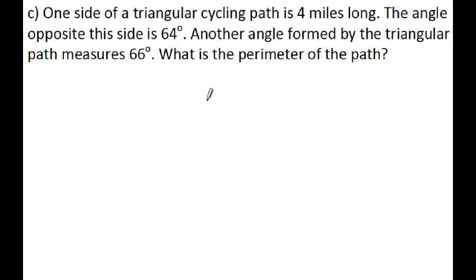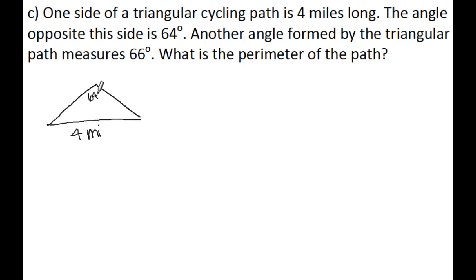Last problem: one side of a triangular cycling path is 4 miles long. The angle opposite this side is 64 degrees. Another angle formed by the triangular path measures 66 degrees. We want to find the perimeter of the path, so we need to find the other two sides — I'll label them X and Y. The third angle is 180 minus 66 minus 64, which equals 50 degrees. Now I have an angle and its corresponding side, so I can use the Law of Sines.